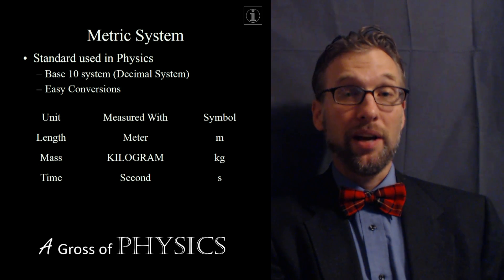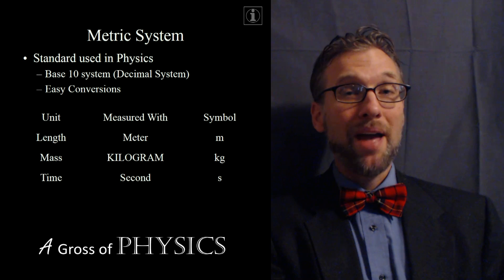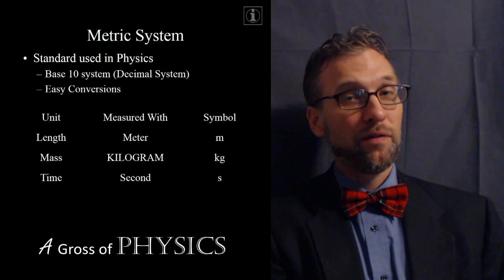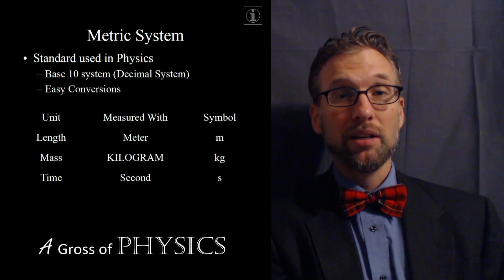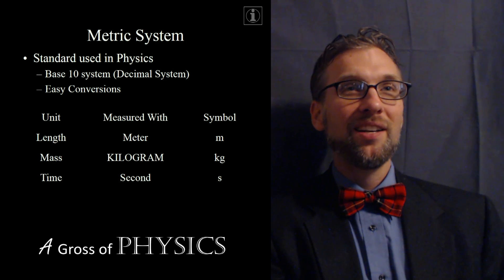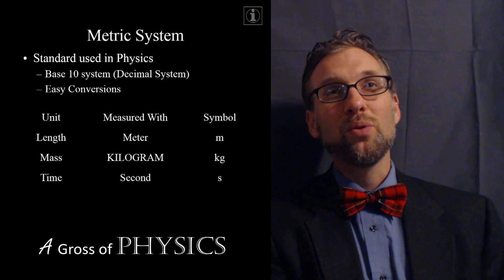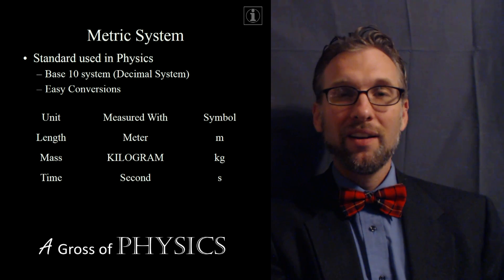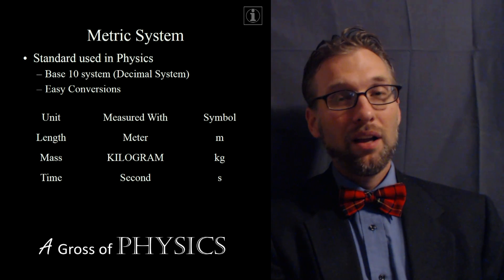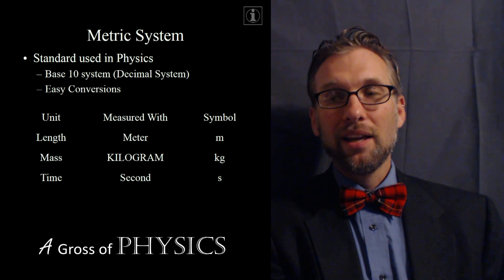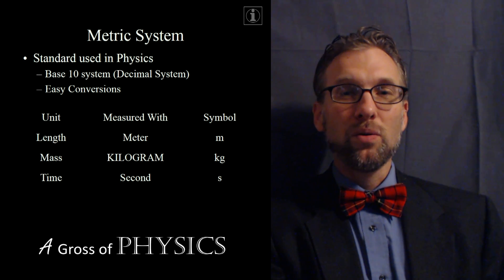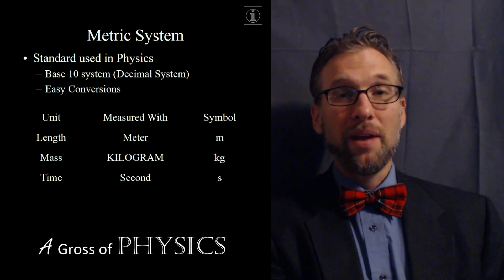Mass is the kilogram, and that's how much mass an object has. It's different from weight, which is the pull of the earth on an object. Mass is typically defined in middle school as the amount of stuff that makes an object up. It's a measure of the molecules that an object is made of.